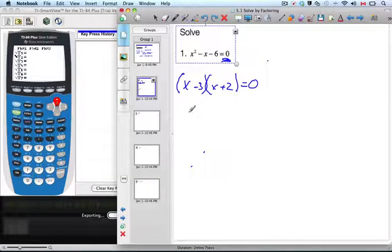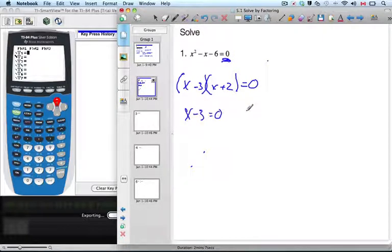Well, now I'm going to apply the null factor law, which says that this number, x minus 3, equals zero, or this number, x plus 2, equals zero.